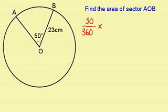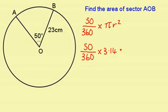I'm then going to multiply this by the area of the circle, which is pi r squared. So I have 50 divided by 360, times 3.14 for pi, times the radius, which is 23, squared.